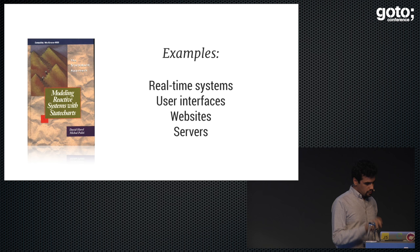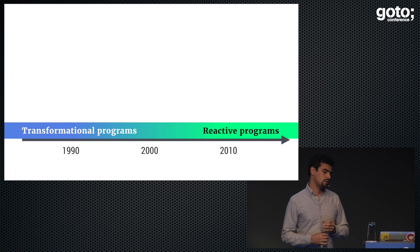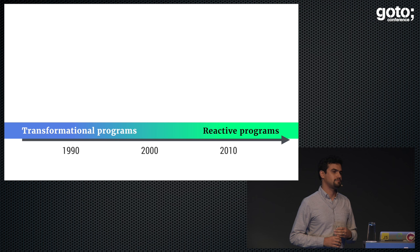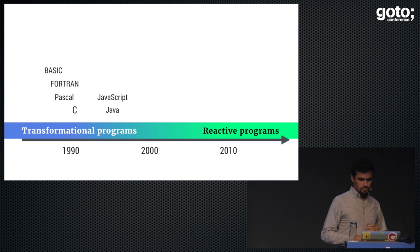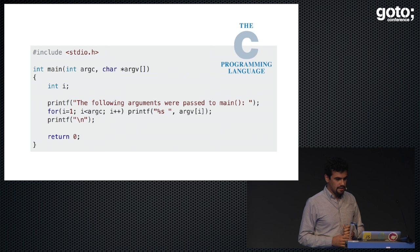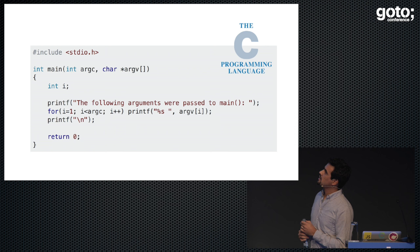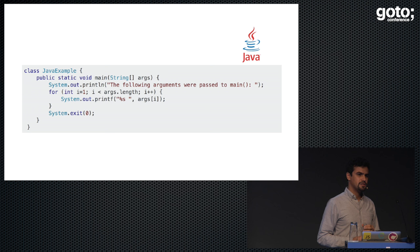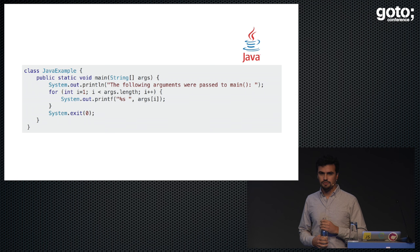In the early 90s, basically any computer program was a transformational system. A kid asks his dad 'what is a computer program?' and the dad says 'you give a file to the computer, it does some stuff, and it spits out another file.' The dominant programming languages of that time were made for transformational programs. C is made for that — you have main, it takes arguments, does stuff in a for loop, returns zero, and dies. Java still has that same pattern: main, takes some arguments, does processing, system.exit zero.